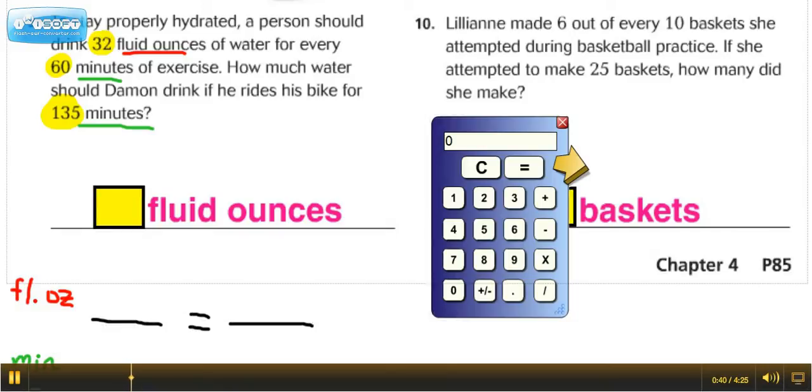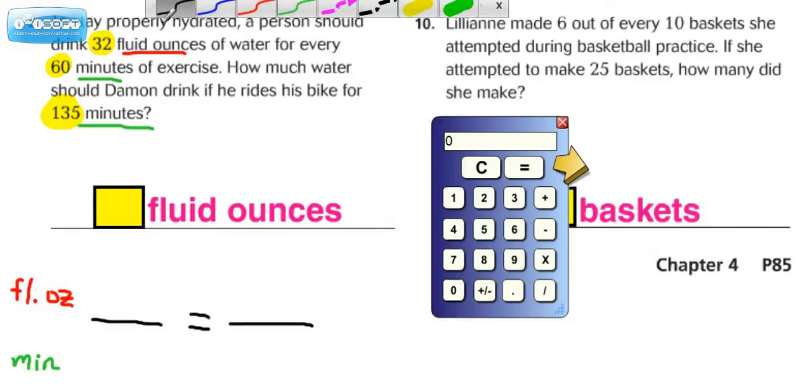So if we take these first two numbers, which are 32 fluid ounces, we'll put that here. And the minutes, 60, we'll put down here. So now the next question you have to ask yourself: where do I put this 135?